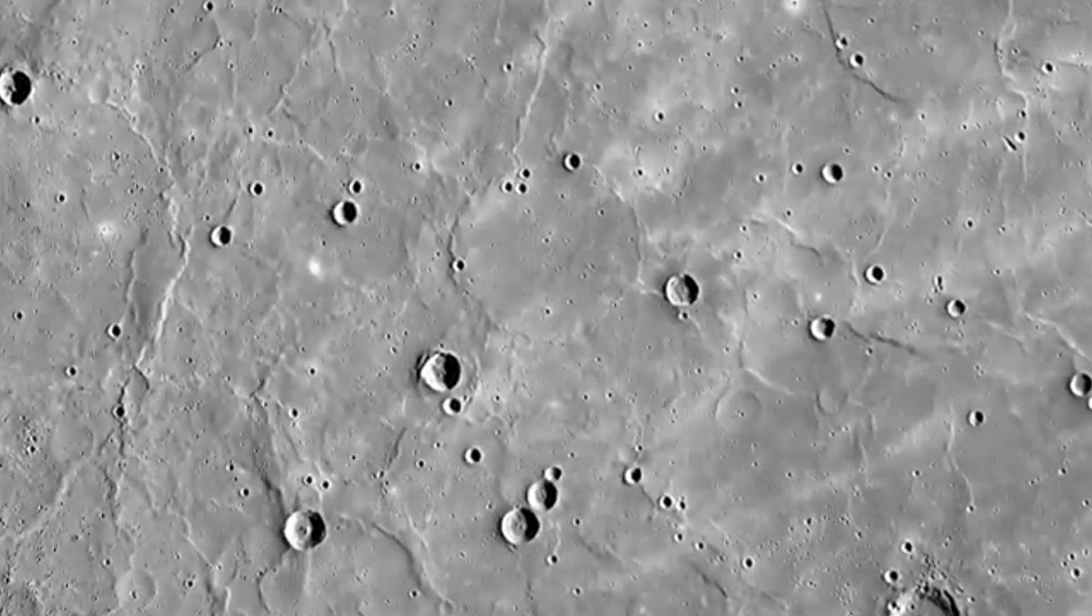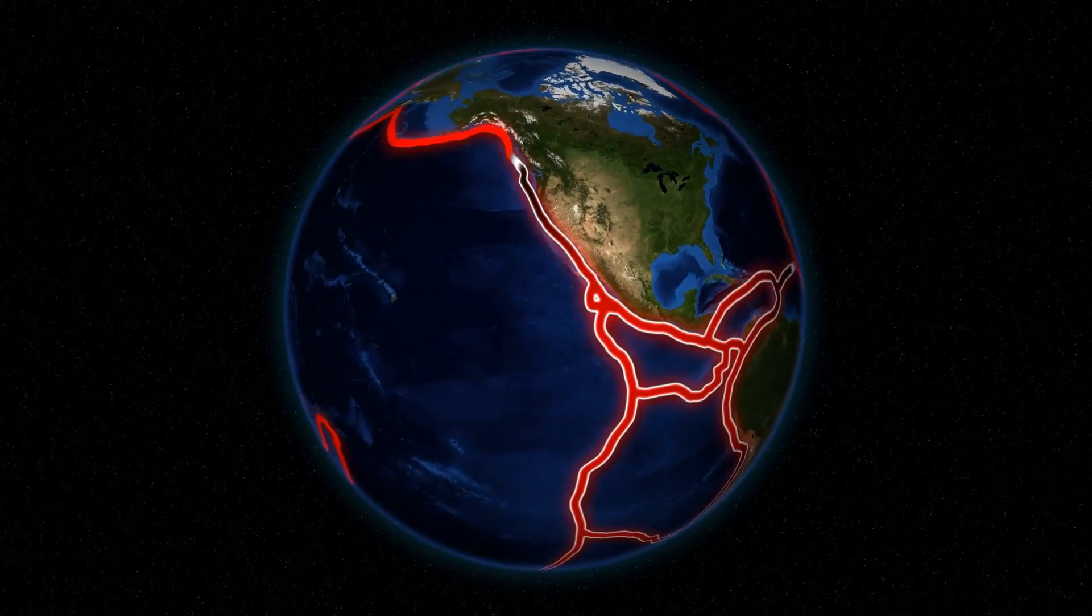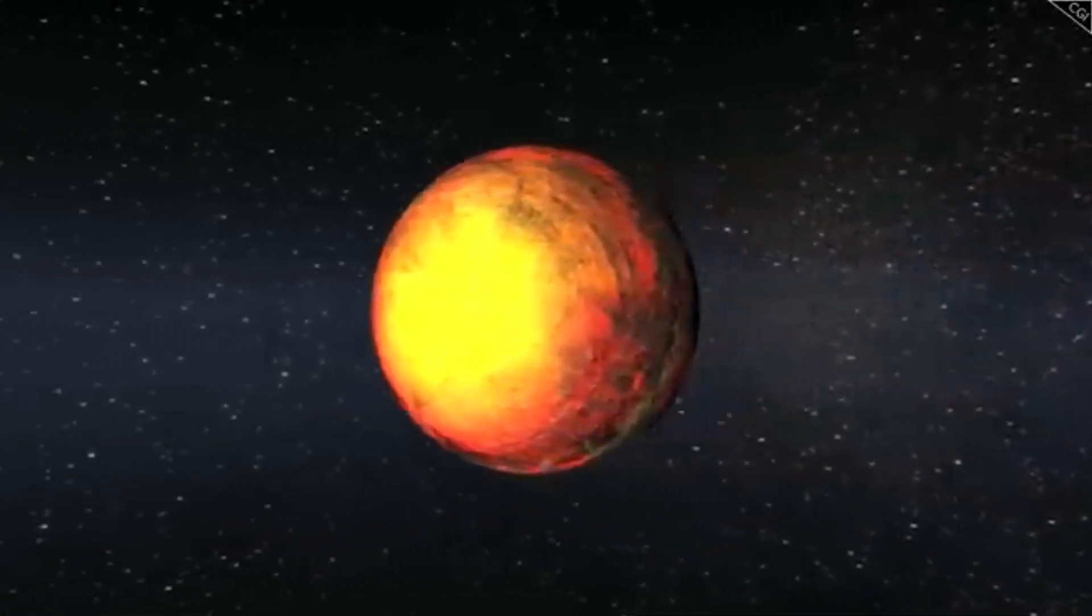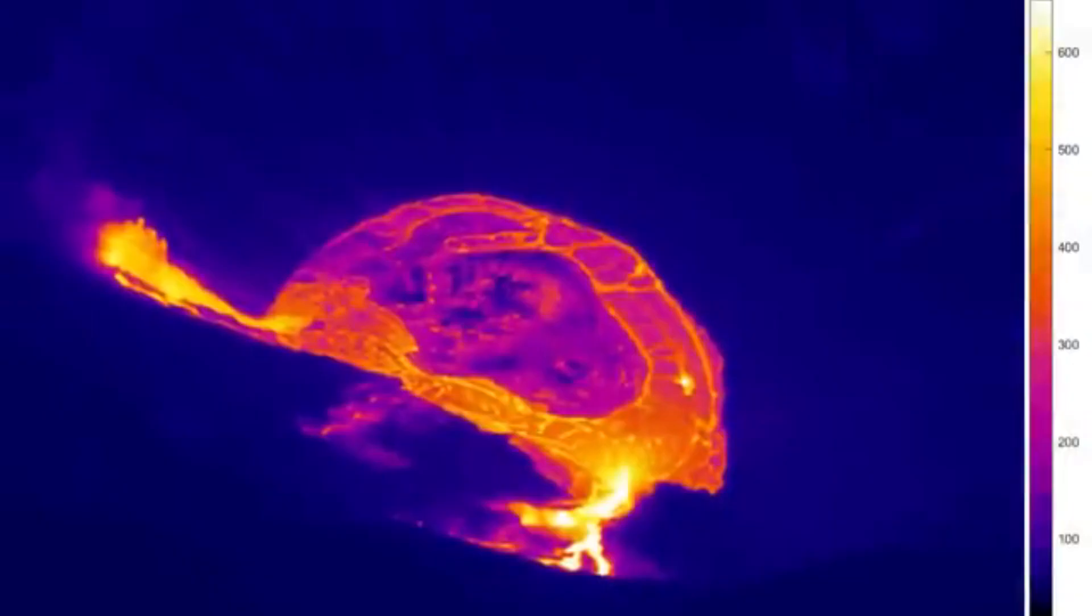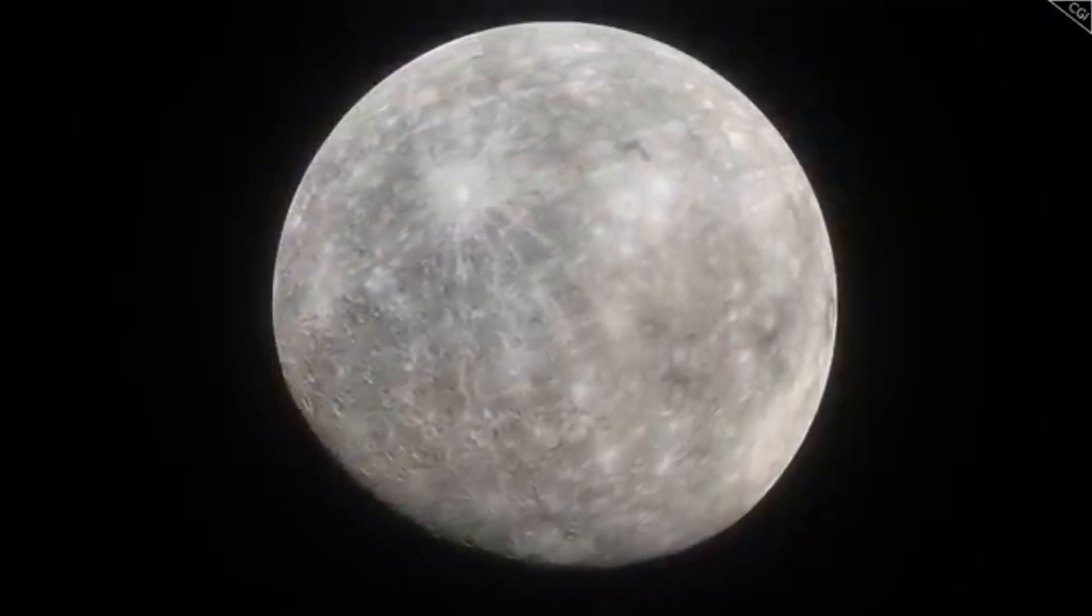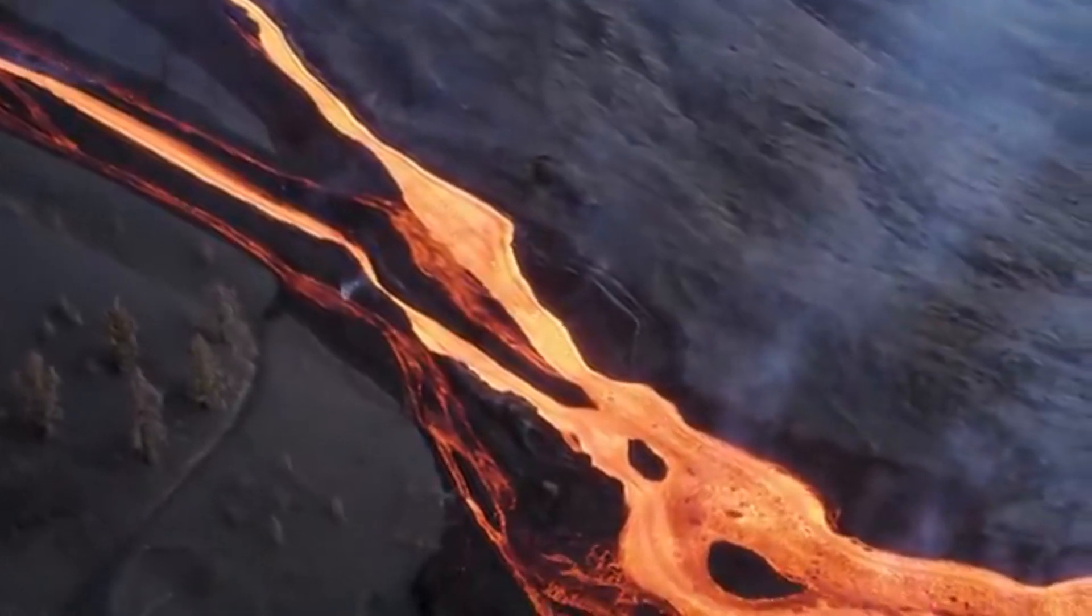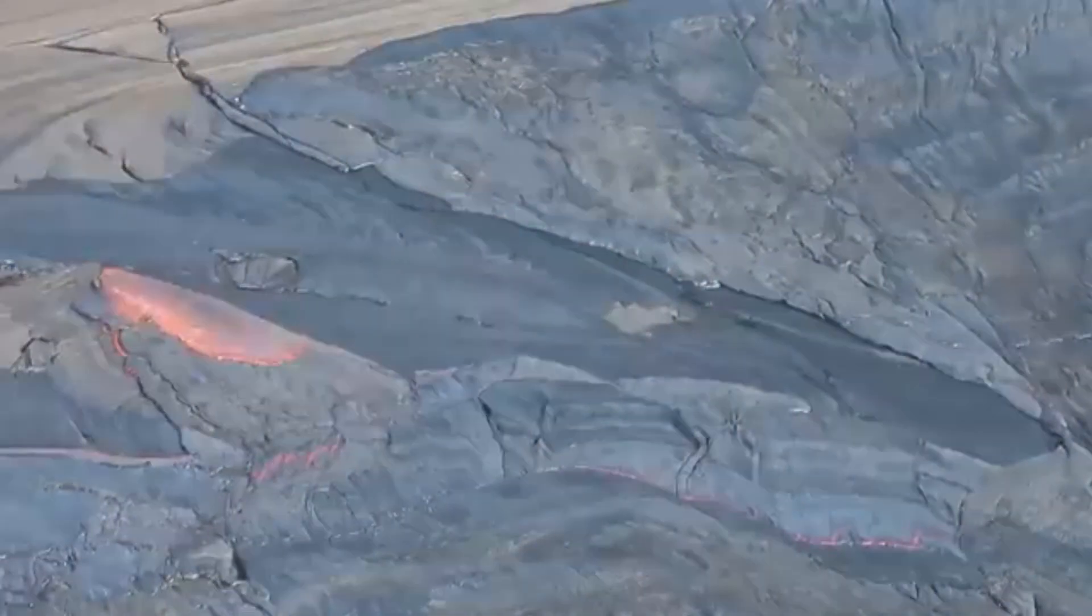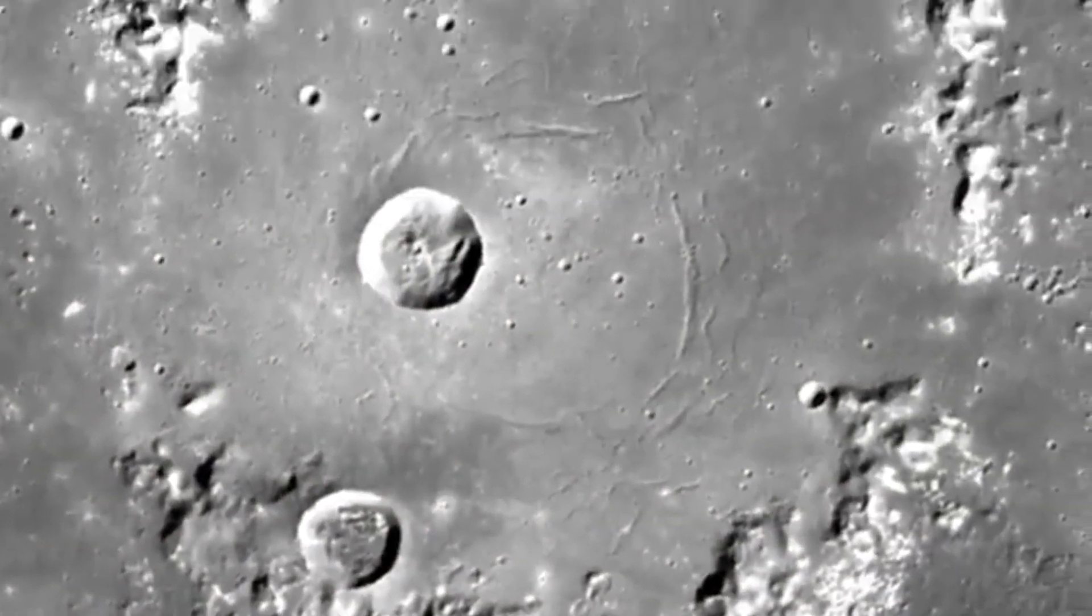Beneath the surface, the history of Mercury's tectonic activity is also revealed. While Mercury does not experience plate tectonics like Earth, evidence indicates that the planet has significantly shrunk over time as it cooled. This shrinkage has led to the formation of many thrust faults, where one piece of the crust has been pushed over another. These cracks, some several kilometers high, provide insights into Mercury's subsurface composition and formation.